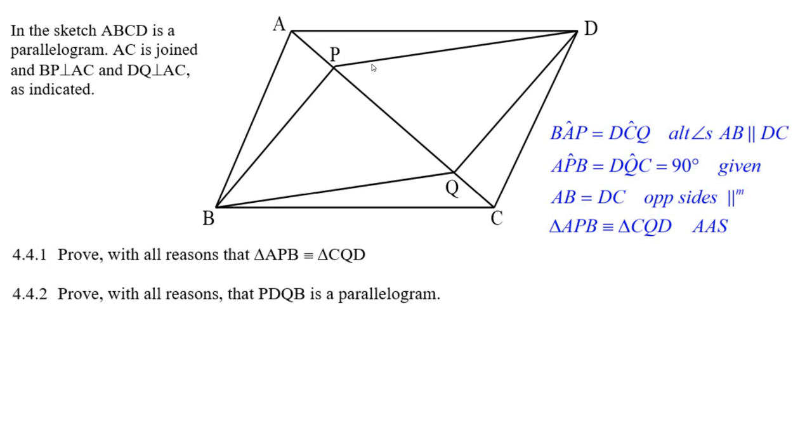Well, that's all you need: two angles and a side that's opposite the corresponding 90 degree angle. So now we know APB is congruent to triangle CQD, angle angle side, AAS, and a corresponding side.